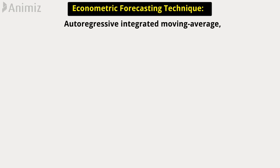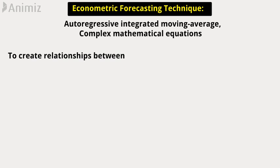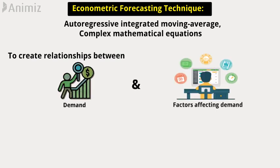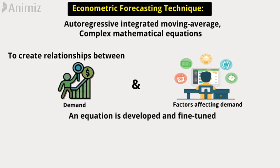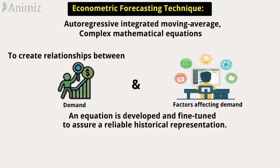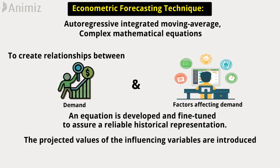Econometric forecasting technique: Econometric forecasting uses autoregressive integrated moving average and complex mathematical equations to create relationships between demand and factors that affect the demand. An equation is developed and fine-tuned to assure a reliable historical representation. Finally, the projected values of the influencing variables are introduced into the equation to make a forecast.